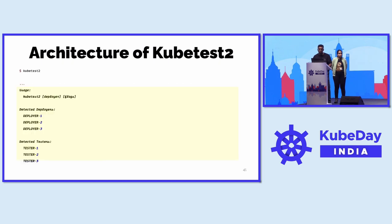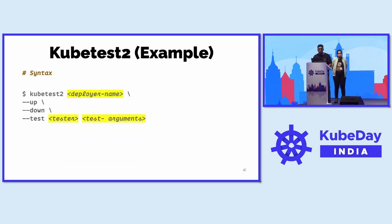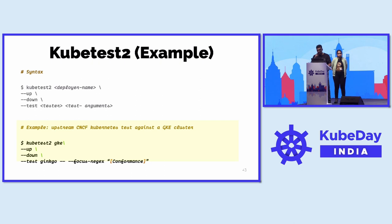You can have multiple deployers and multiple testers, and you can mix and match. The syntax of the command becomes: you run kubetest2 with the deployer you want, with the tests you want, and with instructions to bring the cluster up and down. So: kubetest2, deployer name, up, down, test, followed by the tester name, and the arguments you want to pass to the tester.